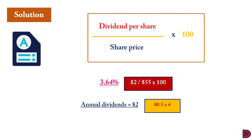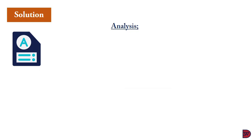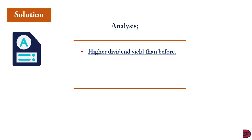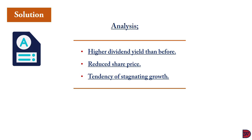The annual dividend of 2 dollars was obtained by multiplying the quarterly payment of 0.50 dollars by 4, since the 0.5 was paid quarterly and the share price is quoted annually. Analyzing this result, we can see that the business declared a higher dividend than its previous year. This can be the result of a higher profit achieved this year compared to last year, or a reduction in the share price while the profit level remained in the same range. This also has a tendency of stagnating growth compared to the previous year.